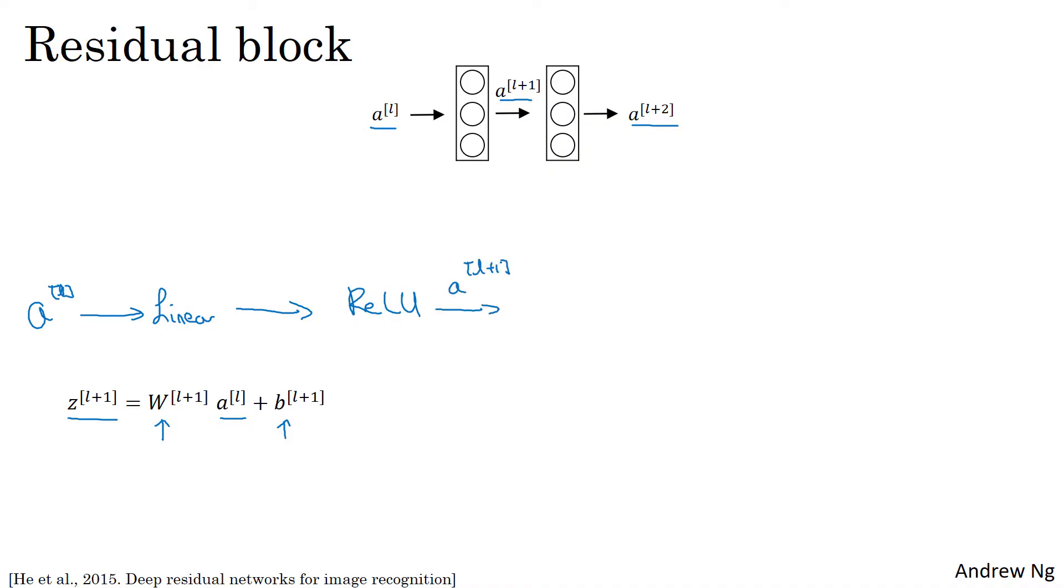So it's governed by this equation where AL plus one is G of ZL plus one. Then in the next layer, you apply this linear step again, so it's governed by that equation. This is quite similar to this equation we saw on the left.